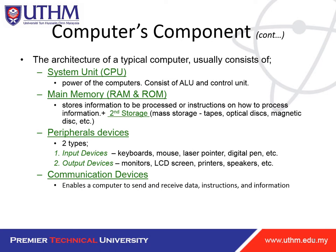The architecture of a typical computer usually consists of a CPU — the system unit, which is the power of the computer — consisting of ALU, control unit, and main memory: RAM and ROM. It stores information to be processed, instructions on how to process information, and secondary storage. There are also various input devices, output devices, and input/output devices.